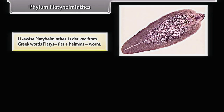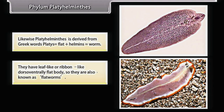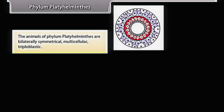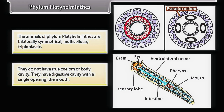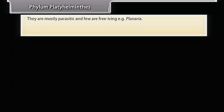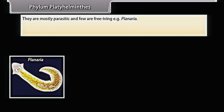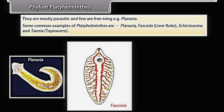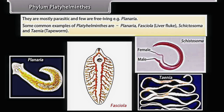Platyhelminthes is derived from Greek words 'platis' (flat) and 'helminthus' (worm). They have a leaf-like or ribbon-like dorsoventrally flat body, so they are also known as flatworms. The animals are bilaterally symmetrical, multicellular, and triploblastic. They do not have a true coelom or body cavity. They have a digestive cavity with a single opening — the mouth. They are mostly parasitic and few are free-living, e.g., Planaria. Common examples are Planaria, Fasciola (liver fluke), Schistosoma, and Taenia (tapeworm).